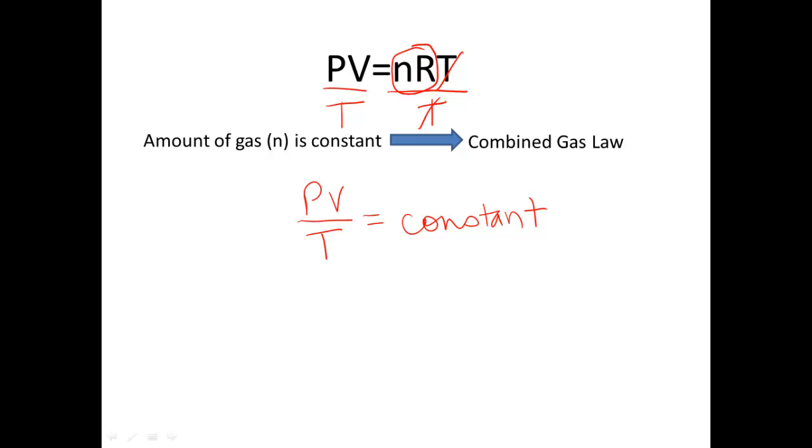Because of this, we get the combined gas law, P1V1 over T1 equals P2V2 over T2, where all of our values on the left side with the one subscript, this is the initial values of our pressure, volume, and temperature. And then, if we change some of those values, at the end, our final conditions are on the right side with the subscript of 2.